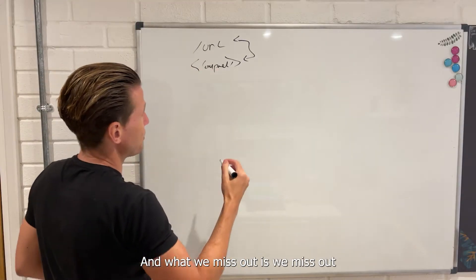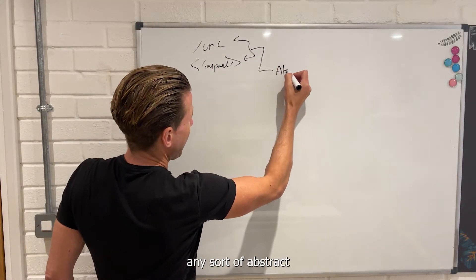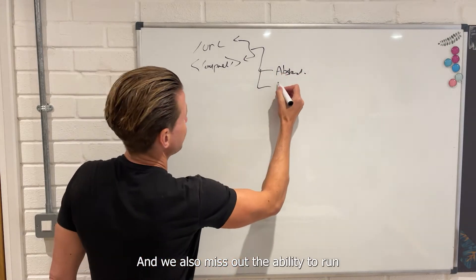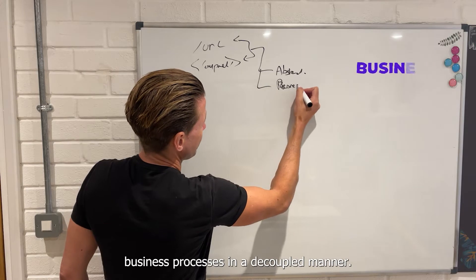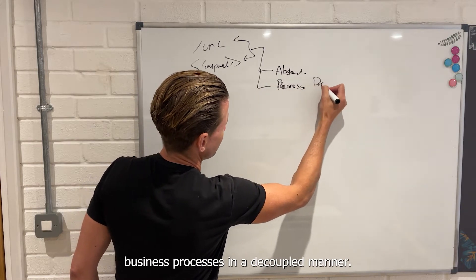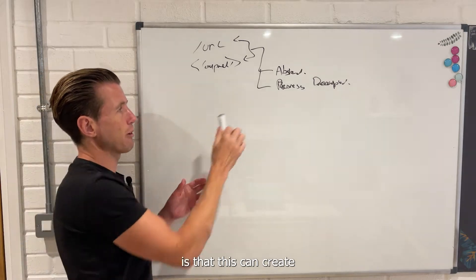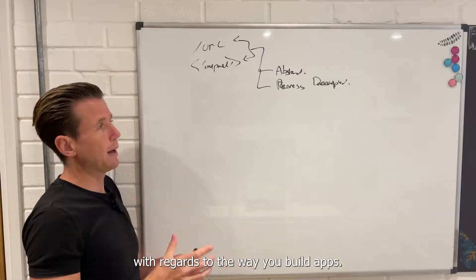What we miss out are two things. We firstly miss out any sort of abstract description of the problem, and we also miss out the ability to run business processes in a decoupled manner. This can create all sorts of problems with regards to the way you build apps.